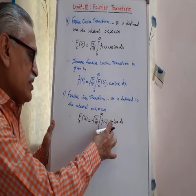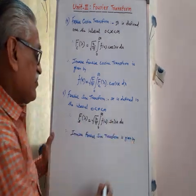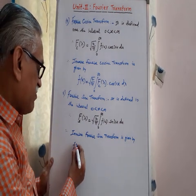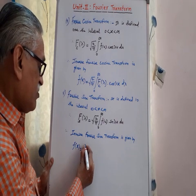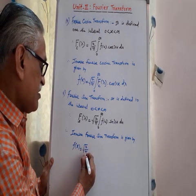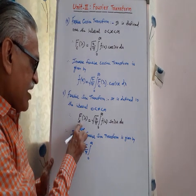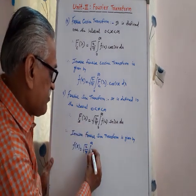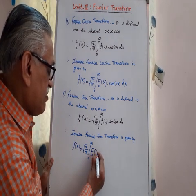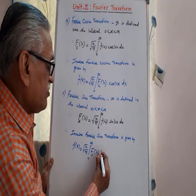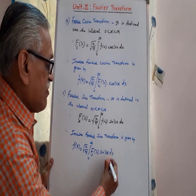The value of this integral we denote as the Fourier sine transform. The inverse is given by f of x equals root 2 by pi, integral from 0 to infinity, of Fs lambda into sine of lambda x, d lambda.